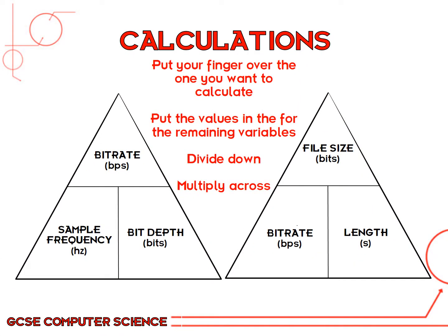A useful technique is drawing formula triangles — pyramids where you can easily remember formulas. Place your finger over the value you want to calculate. For bit rate: cover bit rate and you see sample frequency multiplied by bit depth. For sample frequency: cover it and you get bit rate divided by bit depth. For file size: cover it and you get bit rate multiplied by length in seconds.